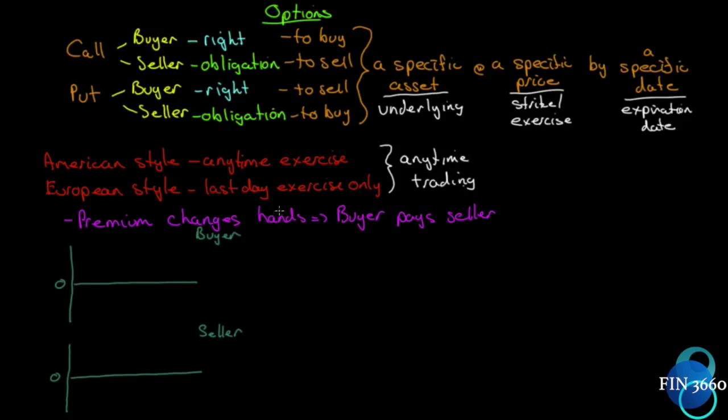Here's the misconception between American style and European style that a lot of beginners don't pick up on: the style pertains to exercise, not trading. European style options have only one exercise date; American style can exercise any time. But they are both anytime trading. Just because you have a European option doesn't mean you can't trade it; it just means you can't exercise it until the last day.